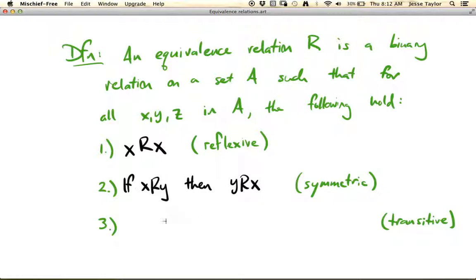And then the last is transitive, and that is if X is related to Y and Y is related to Z, then X is also related to Z. So this property sort of goes down a chain. X is related to Y, but Y is related to Z, which means that you can just say immediately that X is related to Z.